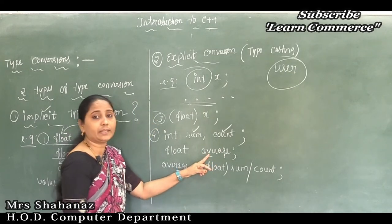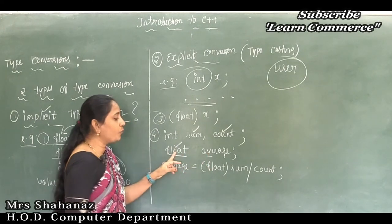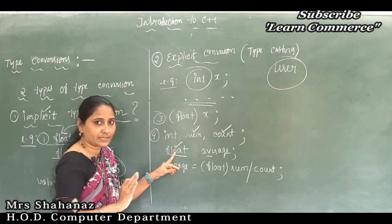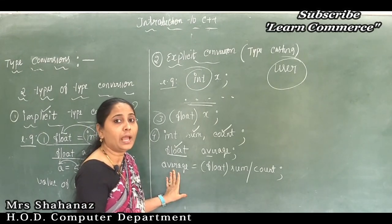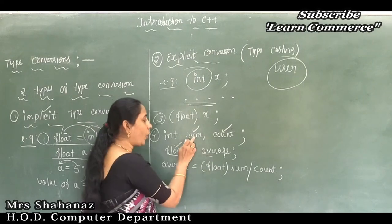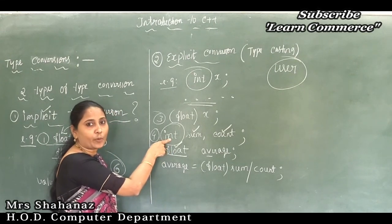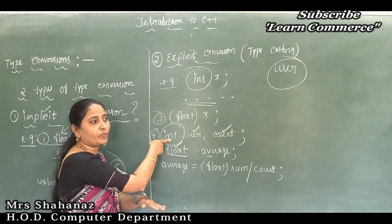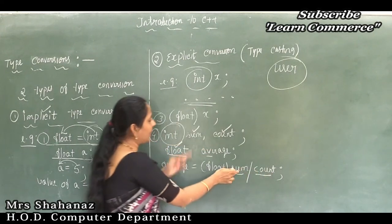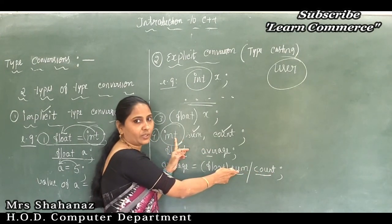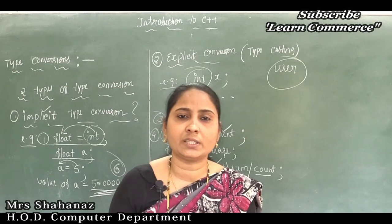One more variable to declare is average, using data type float. In the last step, we calculate the average. We already declared sum and count as int, but now we convert the type to float — this is performed by the user. This is called explicit type conversion or typecasting.